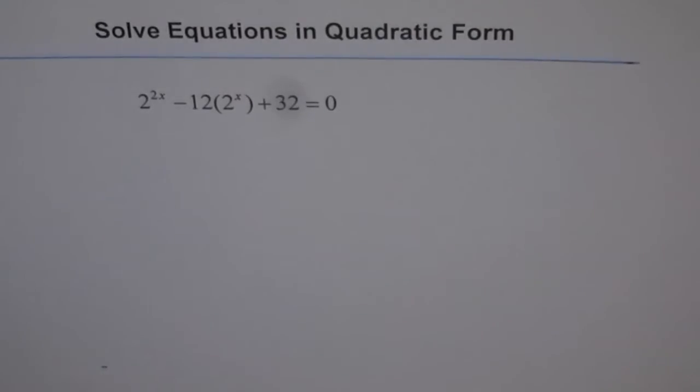Solve equations in quadratic form. We have an equation here which looks like an exponential equation: 2 to the power of 2x minus 12 times 2 to the power of x plus 32 equals 0. But can it be written as a quadratic equation?